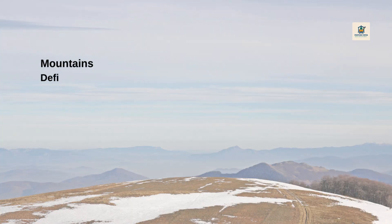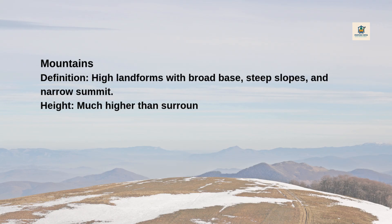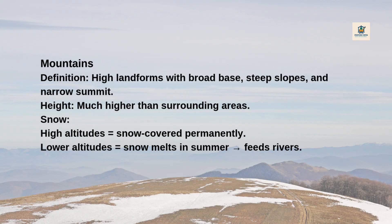Mountains: Definition — High landforms with a broad base, steep slopes, and a narrow summit. They are much higher than surrounding areas. At high altitudes, mountains are permanently snow-covered; at lower altitudes, snow melts in summer, feeding rivers. Hills are smaller than mountains, with rounded tops and less steep slopes.